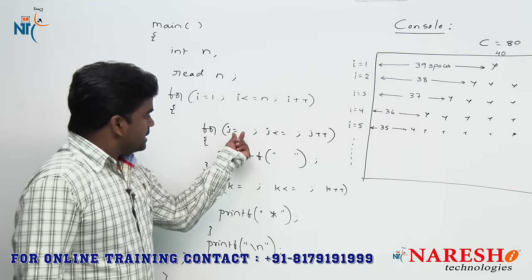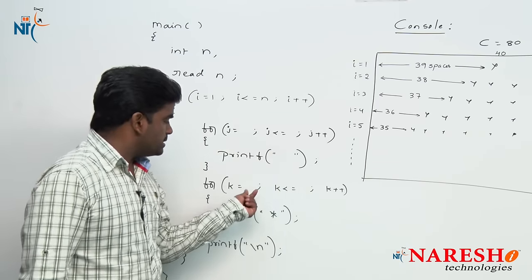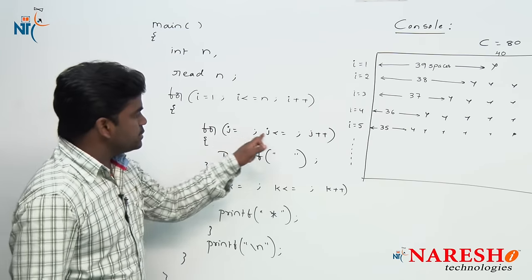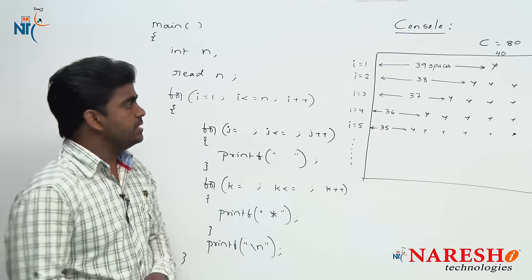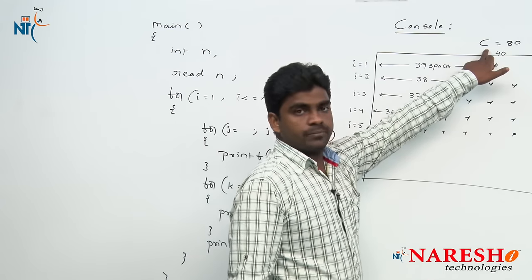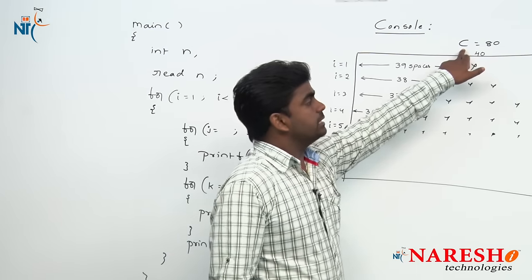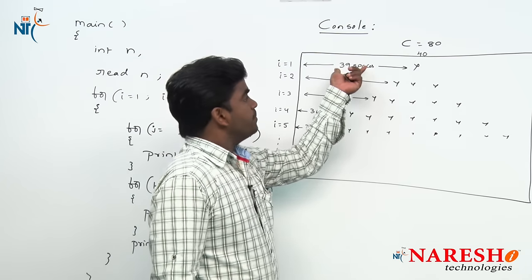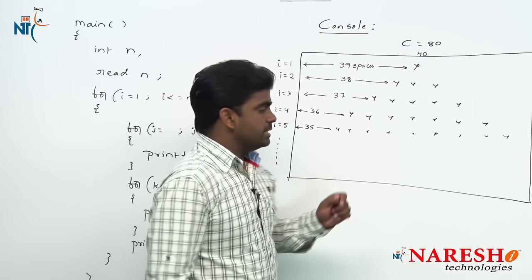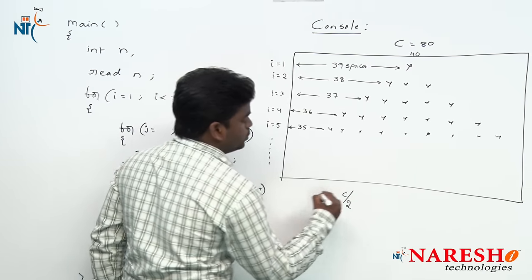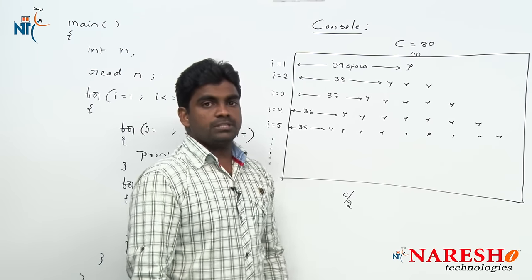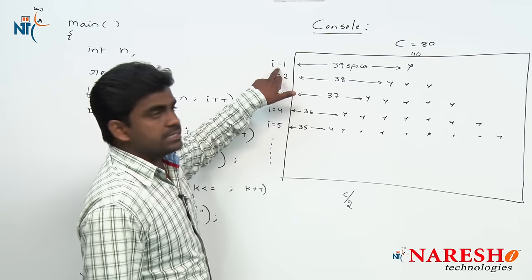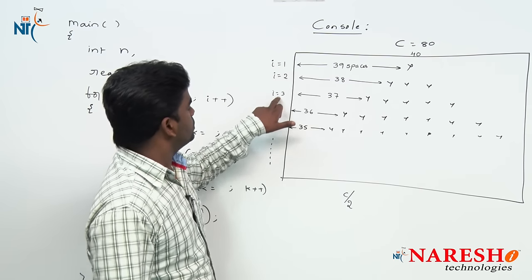Now we need to fill in the initial values and conditions. The spaces condition is easy. C value is 80, so first we need to print 39 spaces. C divided by 2 is 40. The i value increases gradually — 1, 2, 3, 4, 5.